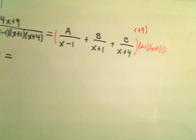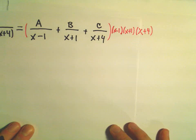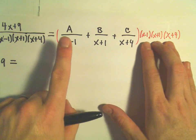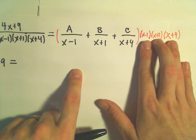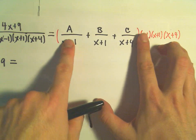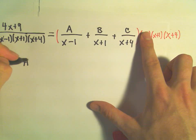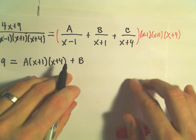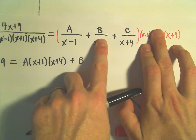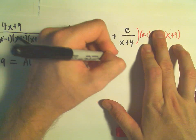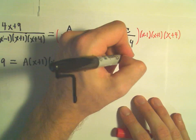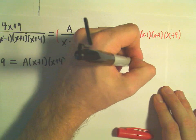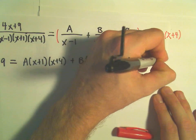On the right side, when we distribute things out, we have to distribute all three factors to each term. When I multiply (x minus 1)(x plus 1)(x plus 4) to the first term, the (x minus 1)'s cancel and we're left with A times (x plus 1)(x plus 4). For the second term, the (x plus 1)'s cancel, leaving B times (x minus 1)(x plus 4). And for the third term, the (x plus 4)'s cancel, leaving C times (x minus 1)(x plus 1).